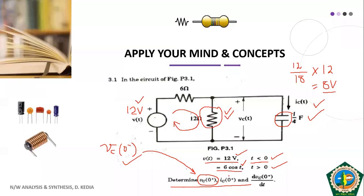Now let us move to the second part, that is IC(0+). IC(0+) needs certain calculations. We need to look into how much current will be flowing through this circuit. If you remember, the equation for an RC circuit gives us the current across the capacitor. IC(0+) cannot be equal to IC(0−) — you have to understand this because in the case of a capacitor, VC(0+) equals VC(0−), but we cannot apply that condition for current.